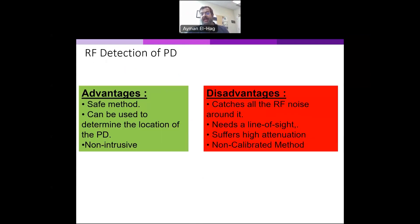Again, there are certain disadvantages and limitations. The RF antenna can catch any sort of noise around us, so this is one of the problems. Then you have to do some denoising techniques. Also, it needs line of sight. Your object that you are detecting, there should be no any sort of barrier between the antenna and that source of partial discharge. Of course, it will suffer from high attenuation, especially if the partial discharge is inside the insulation system.